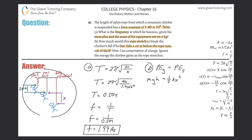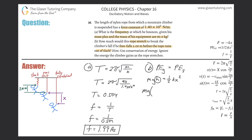The key to the problem is: what is the total height he falls? According to the picture, the total height is not just two meters — the total height he falls is the two meters of free fall plus the amount x that the string stretches. So we can write mg times (2 + x) equals one half kx squared.